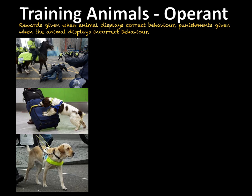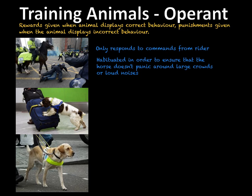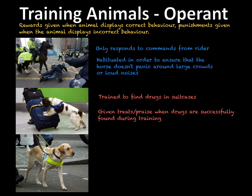Some examples can be seen here. First, we have a police horse which has been trained to only respond to commands from its rider, as well as being habituated to ensure it does not panic when surrounded by a large group or with a large amount of noise — overcoming that innate response to panic and bolt. Our second example is a sniffer dog. Sniffer dogs have been trained to find drugs in suitcases; the dogs are rewarded when they find the drugs during training, so they associate finding the drugs with getting the reward.